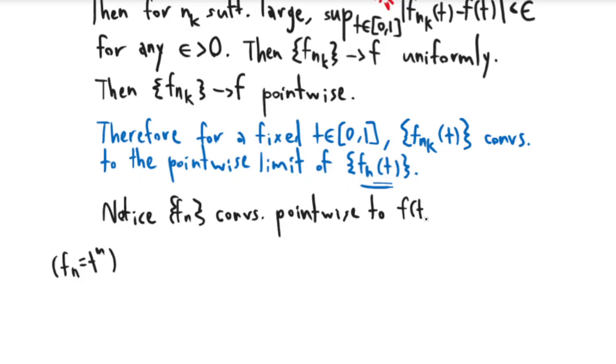To f(t) given by: 1 if t = 1, and 0 if t is between 0 and 1.